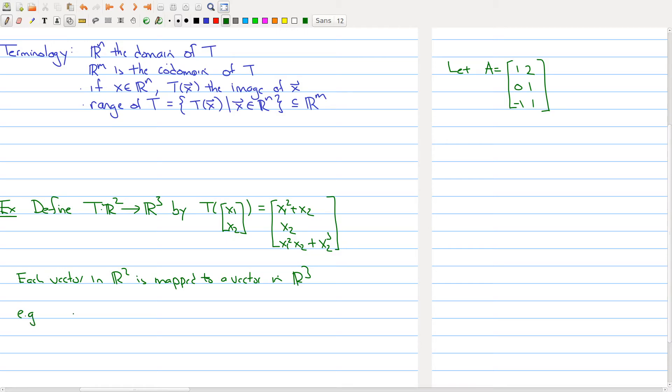So as a specific example, suppose that I wanted to know, well, where does the vector 1, 2 go? Well, it tells me that the vector 1, 2 should get sent to the following vector. I should send it to 1 squared plus 2. In the second coordinate, I just take the x2 still. And then the last coordinate, I should have 1 squared times 2 plus 2 cubed. And I do all my calculations. The first coordinate becomes 3. The second coordinate becomes 2. So 1 squared times 2 plus 2 cubed. So 2 cubed is 8. So I get 10. So that gives me an example of a function from R2 to R3.